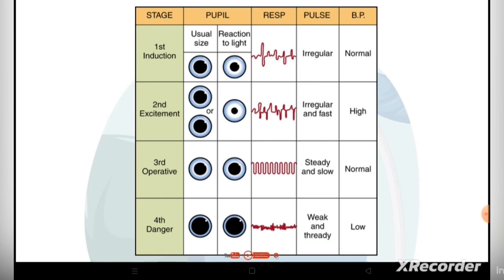We can see all these changes in a person during the stages of anesthesia. Looking at the pupil in the presence of light: in stage one, the normal pupil constricts. In stage two, it constricts even more — more than stage one. In stage three, it remains constricted. In stage four, the pupil becomes fully dilated, even in the presence of light.